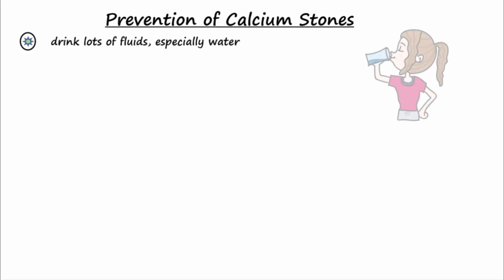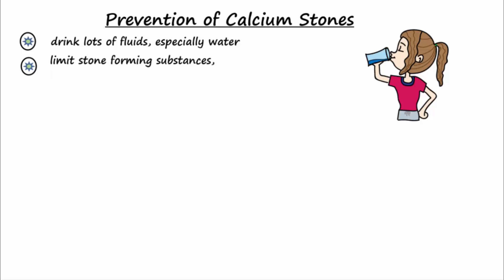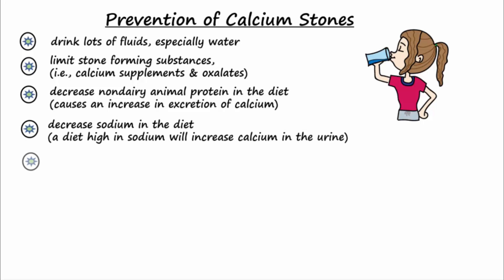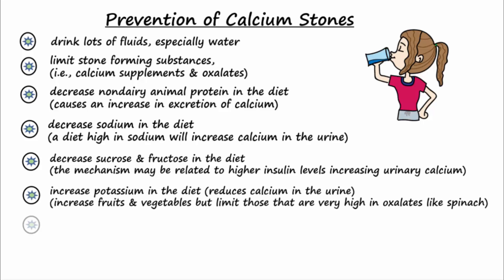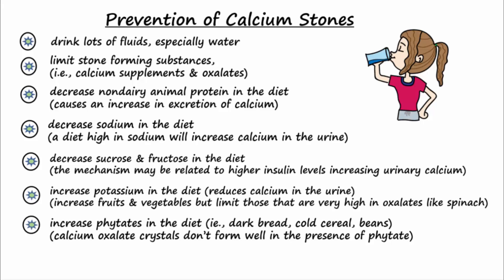Kidney stone patients should be encouraged to drink lots of fluids, especially water, to prevent supersaturation of the urine and stone formation. Patients should also limit excess stone-forming substances in the diet, such as calcium supplements and oxalate-containing foods. Patients should decrease non-dairy animal protein, sodium, sucrose, and fructose in the diet. Patients are encouraged to increase potassium and phytates in the diet to help prevent stones from reoccurring. ACV may be helpful, but most evidence is anecdotal.